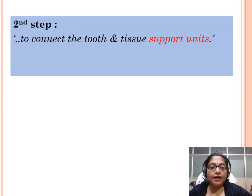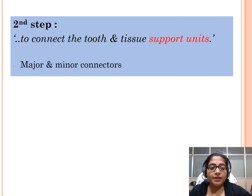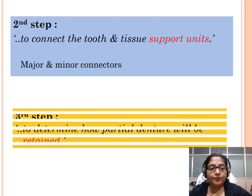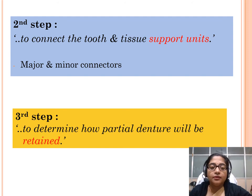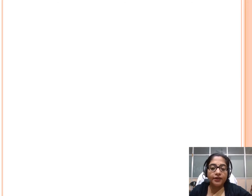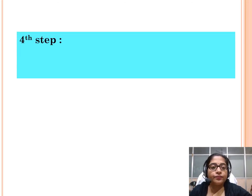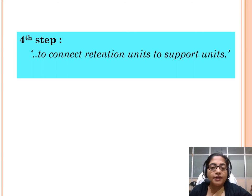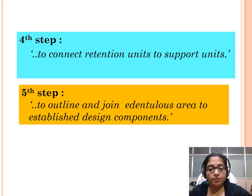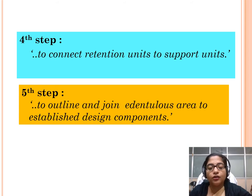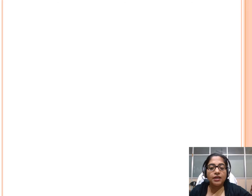The second step is to connect the tooth and tissue support units — that is the major and minor connector design. The third step is to determine how the partial denture will be retained — the direct retainers and indirect retainers. The fourth step is to connect the retention unit to support units with minor connectors. The fifth step is to outline and join the edentulous area to the established design components.